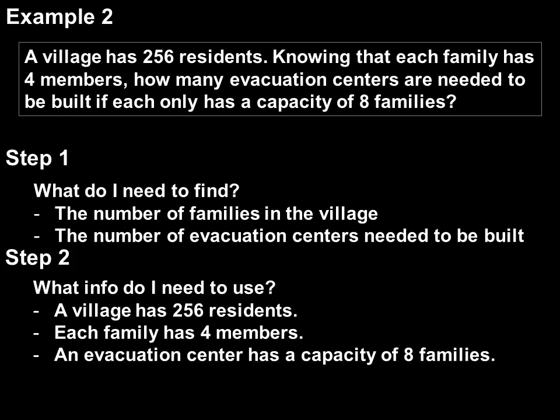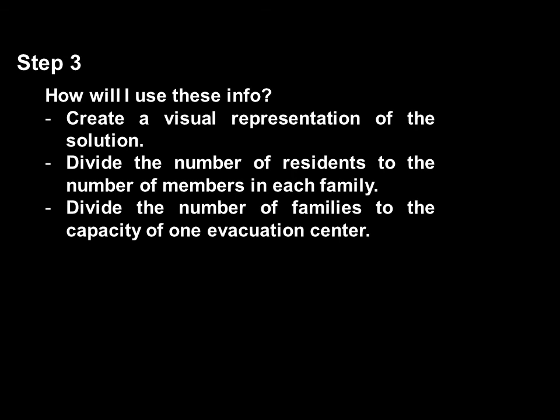What info do I need to use? A village has 256 residents. Each family has 4 members. And an evacuation center has a capacity of 8 families. Then, we must create a visual representation of the solution. Divide the number of residents by the number of family members, and divide the number of families by the capacity of one evacuation center.